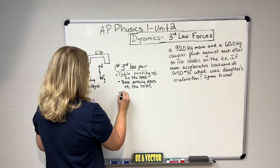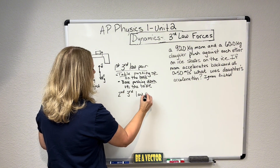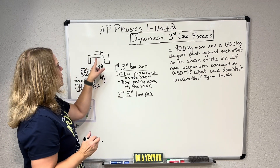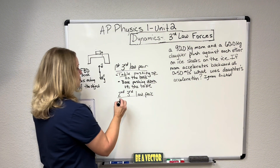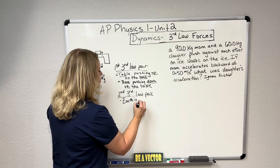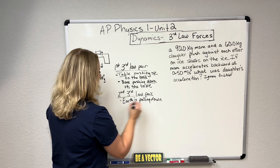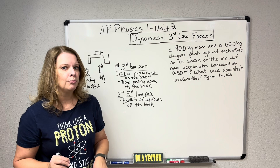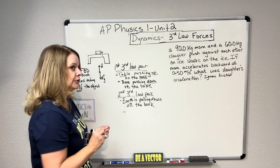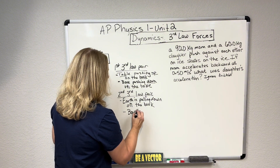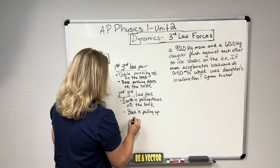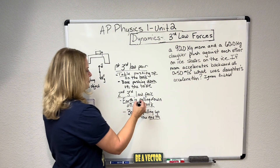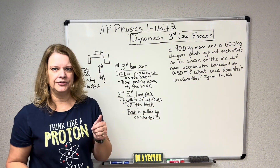Now, what's the second third law pair? This one is a little hard to wrap your brain around — it's kind of mind-blowing. The second third law pair is that the Earth is pulling down on the book. And guess what? The book is pulling up on the Earth. So you have Earth and book — two objects. Earth is pulling down, the book is pulling up. Opposite and equal reactions.